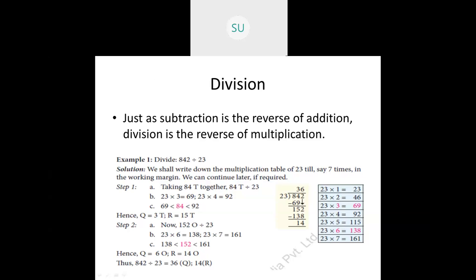Step 1 is taking 84 together and dividing it by 23. When you do 84 divided by 23, you look at where 84 falls in the 23 times table. In the 23 table, 84 is not there but is nearby to 69 and 92. Since 92 is greater than 84, we take 69. So 23 threes are 69, we write 3, and then 84 minus 69 gives us 15.